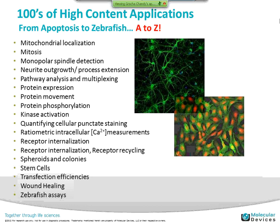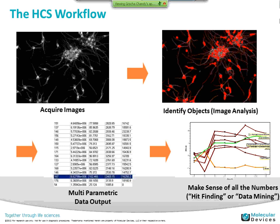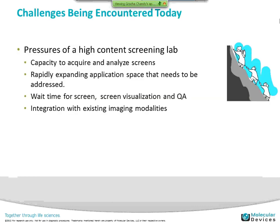From yeast biology to zebrafish to neural analysis — a wide variety of applications can be handled. Generally the workflow is putting your cells into plates, acquiring the images, having some automated way to identify objects, turning those images into a segmentation mask, giving you that data output, and then a way to make sense of all the numbers and to plot those numbers over time or the X axis appropriate for your biology.